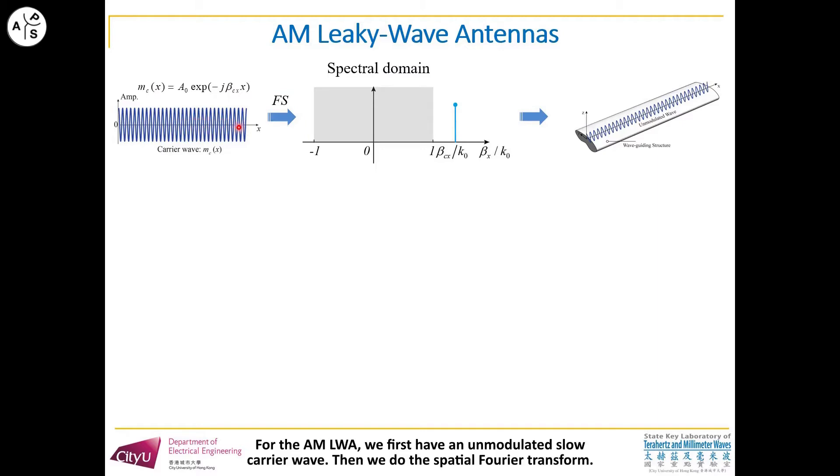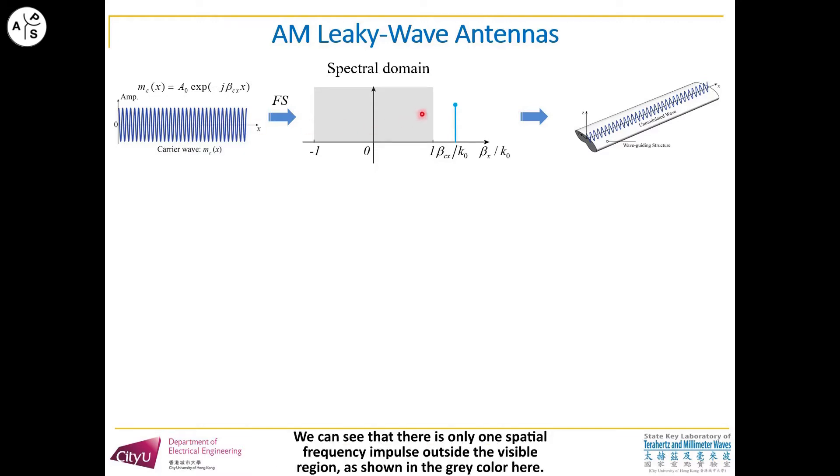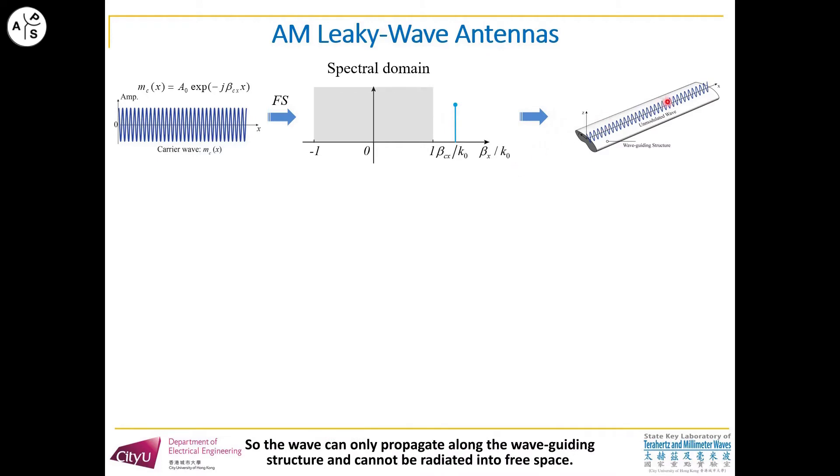For the AM leaky antenna, we first have an unmodulated slow carrier wave. Then we do the spatial Fourier transform. We can see that there is only one spatial frequency impulse outside the visible region, as shown in gray color here. So the wave can only propagate along the wave-guiding structure and cannot be radiated into free space.